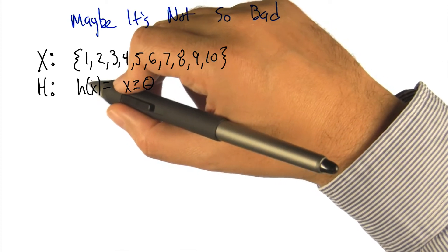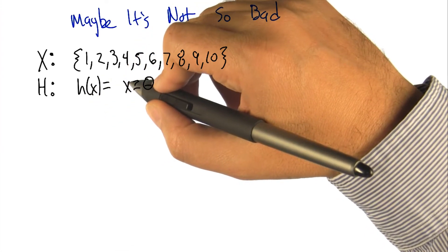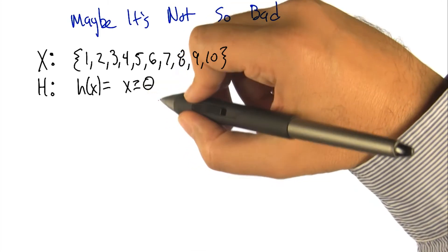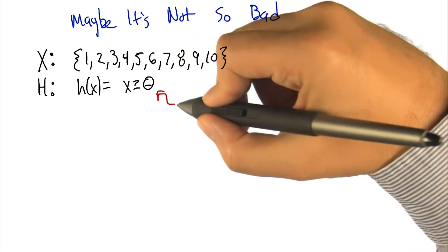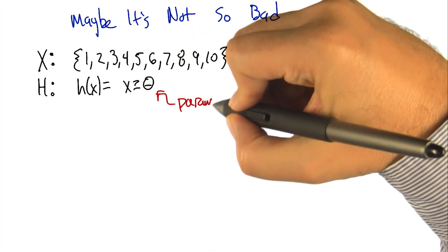And our hypothesis space is you take an input and then you just return whether or not it's greater than or equal to some theta. So that's a parameter.